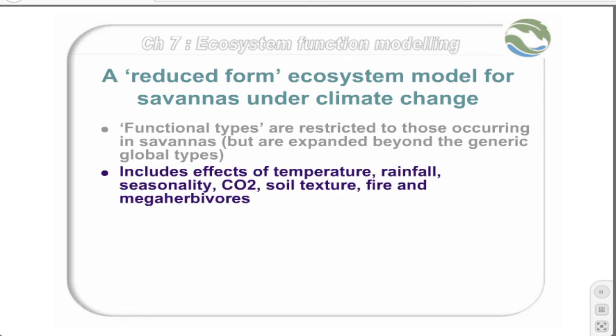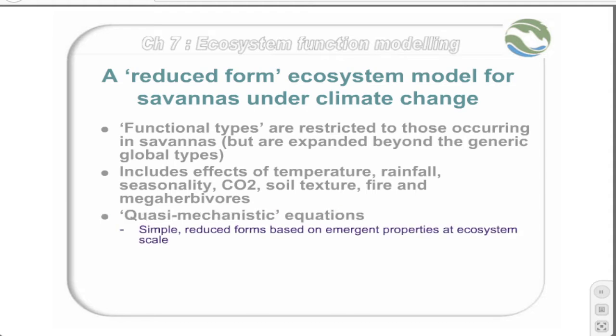The functional types of the system are restricted to those occurring within the savannah region, but they were significantly expanded beyond the generic global types. This model includes the effects of temperature, rainfall, seasonality, carbon dioxide, soil texture, fire regimes, and mega herbivores. The equations used to integrate these are quasi-mechanistic in nature. That is, they are simple, reduced forms of the mechanistic processes that work within plants, and they describe the emergent properties that are observed at an ecosystem scale.